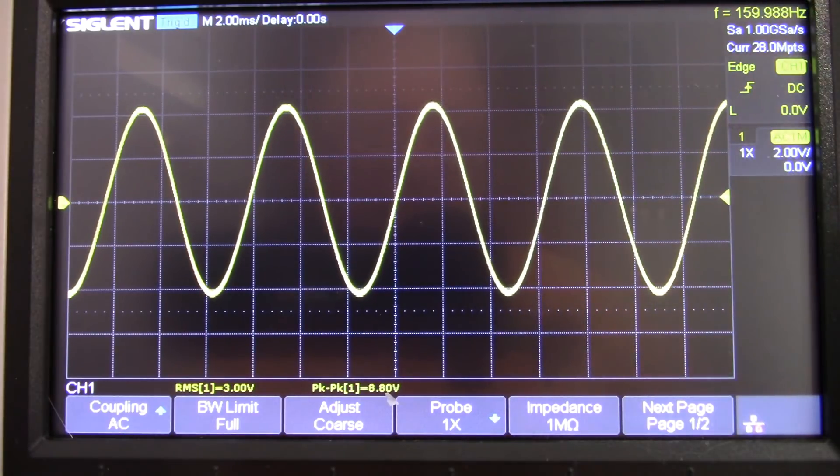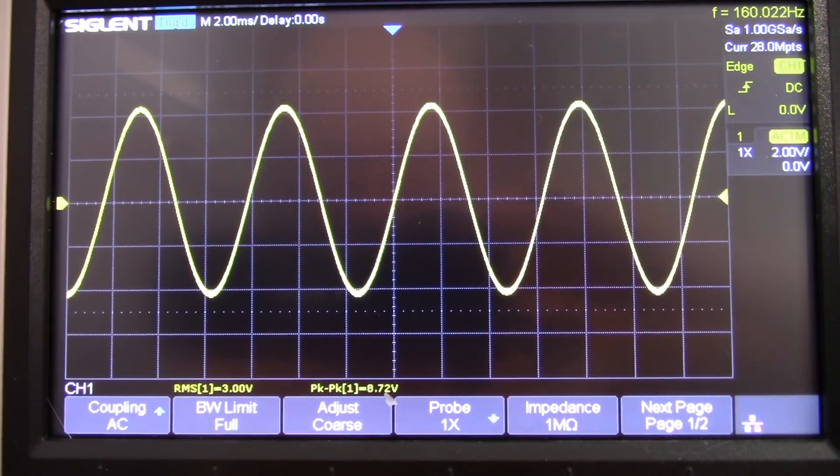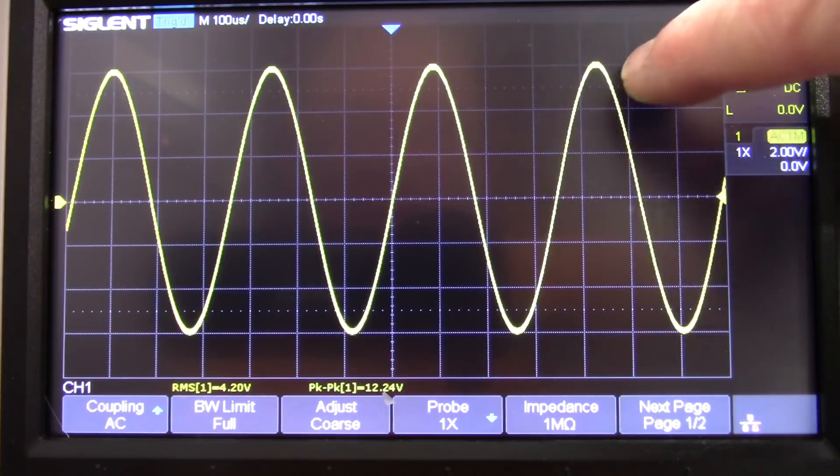Okay right around here is 3 dB down at 160 hertz. So that's the frequency characteristic of the subwoofer channel.